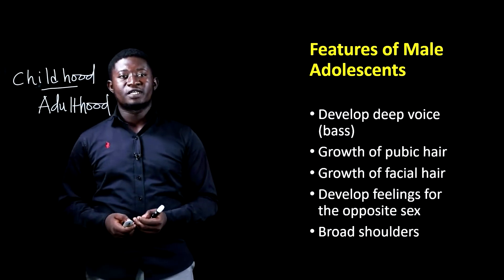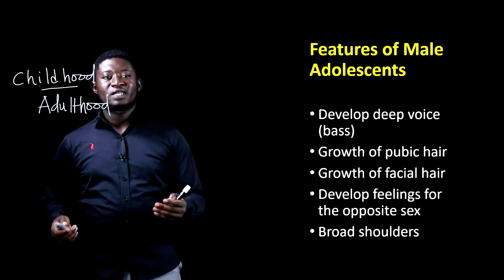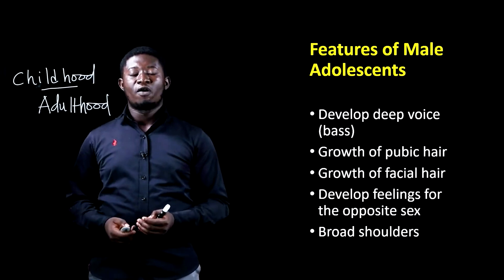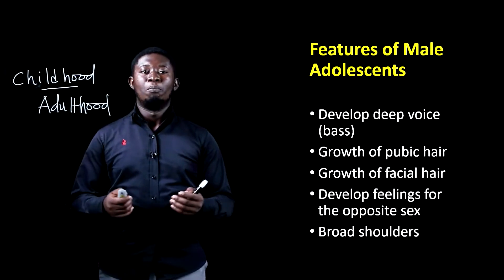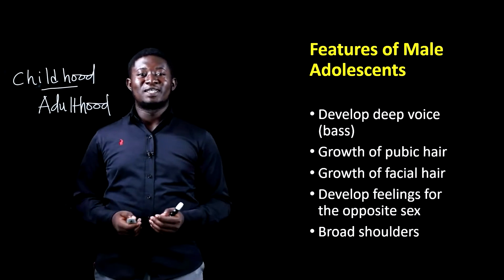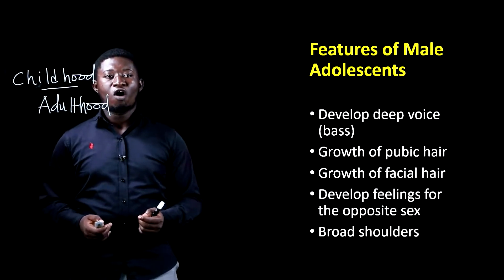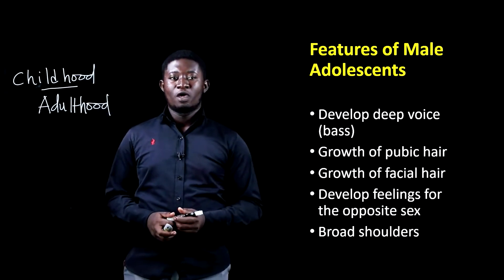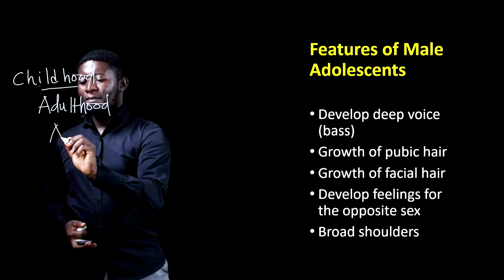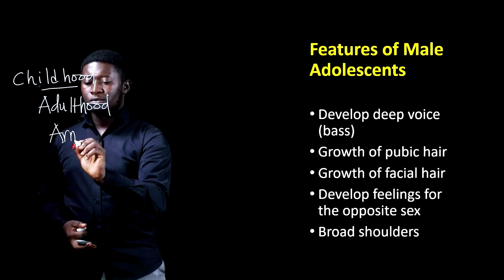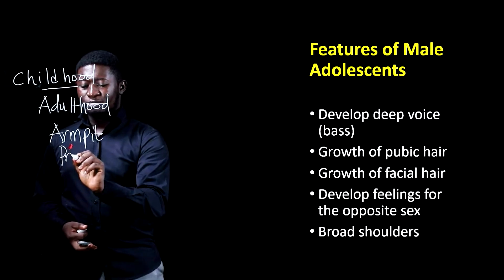We'll look at some features of male adolescence. The most important or key thing is the development of a deep voice — this deep voice we call bass. The next one is the growth of pubic hair. When we talk about pubic hair, we are talking about hair on the armpit and on your private part.